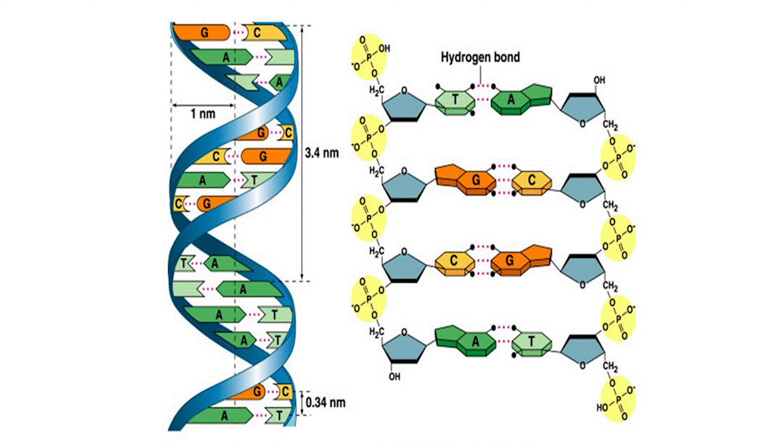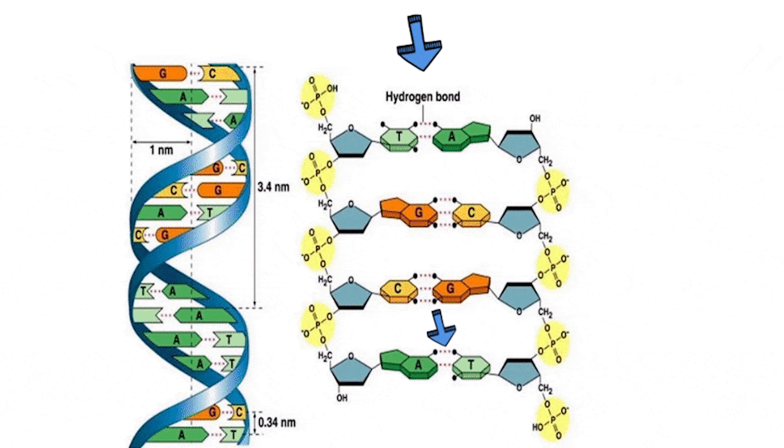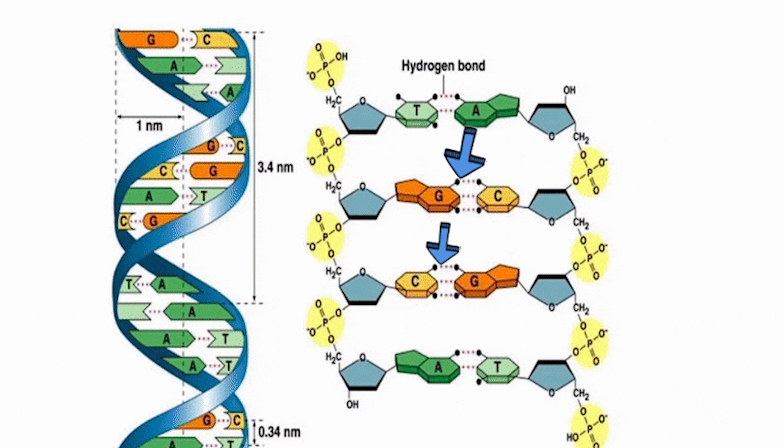Adenine always pairs with thymine by using two bonds or double bonds, and guanine always pairs with cytosine by using triple bonds.